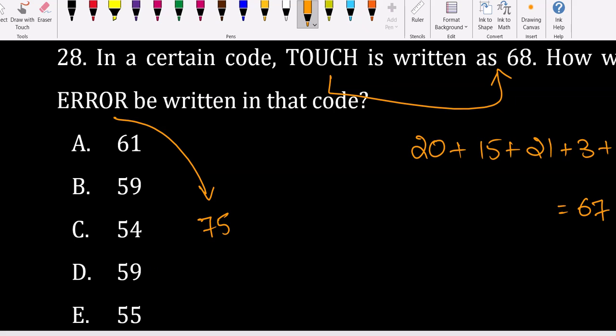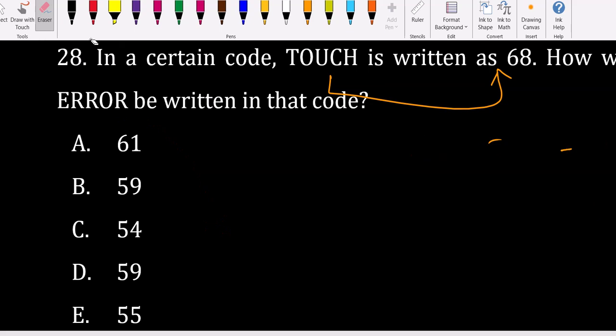Think about other logic - is there any other possibility like reverse code? We're not getting the answer with forward code. The options don't match even with plus 1. Since plus 1 still gives us 75 which doesn't work, we have to think about reverse code.